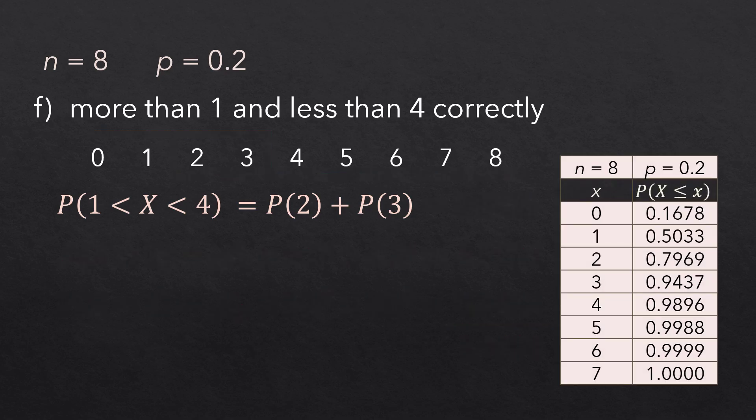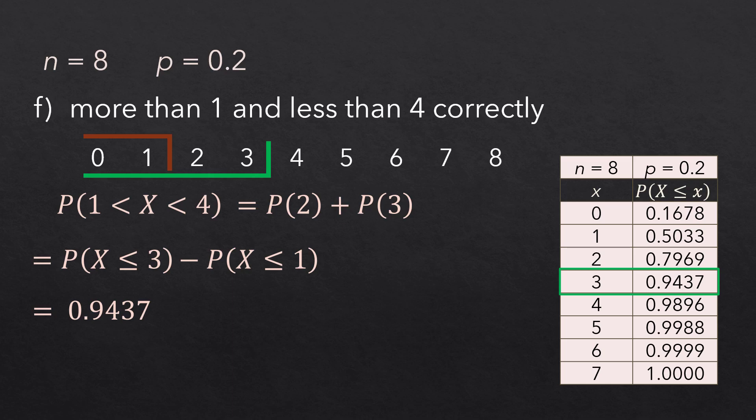Now, from the cumulative table, since we only want to capture 2 and 3, we can take the cumulative up to 3 and subtract cumulative up to 1 from it. Therefore, from the table, we take the 0.9437 and subtract the 0.5033 from it to obtain the 0.4404 we had before.